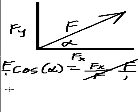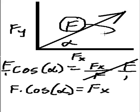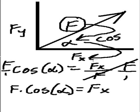It leaves us with f times the cosine of alpha is equal to f of x. So this guy, f, times the cosine of alpha will give us this guy, f of x. Isn't that just too simple?